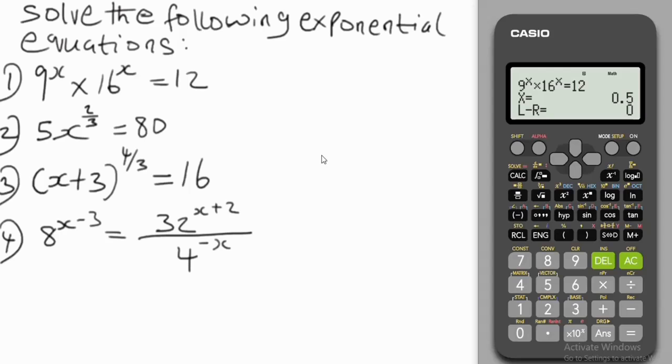So it's as simple as this guys. Now you will notice that when you store x as 0.5 and use it to solve 9 to the power of x times 16 to the power of x, you get 12. Let's experiment, you guys, so you guys understand it better.